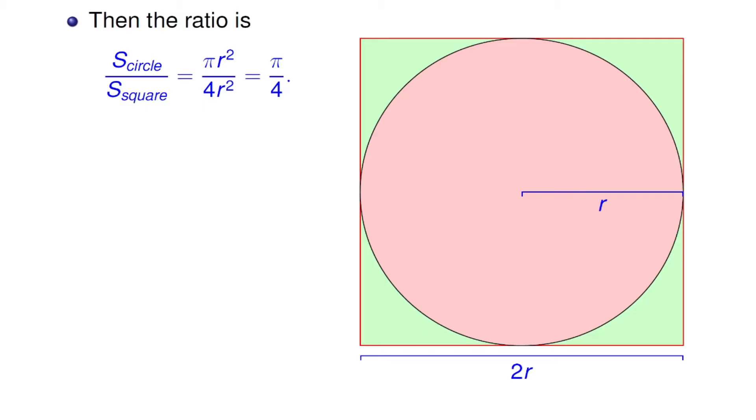Now the ratio of their areas is going to be S_circle over S_square, which equals pi r squared over 4 r squared. Now r squared and r squared cancel out, and this equals pi over 4.